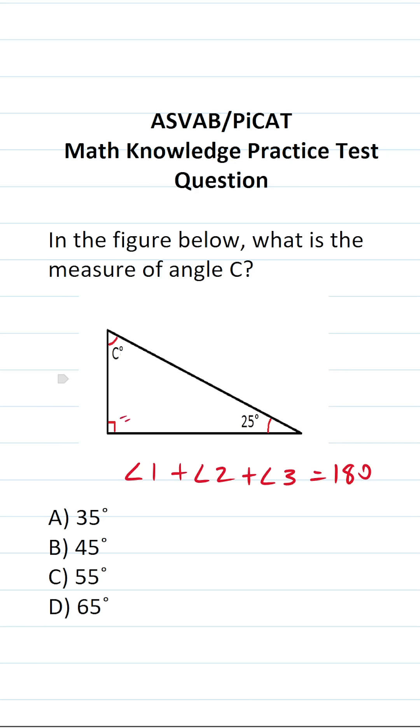We know that this angle right here is a right angle, so it's going to be 90 degrees. So 90 degrees plus this angle is 25 degrees plus angle C is going to always add up to 180 degrees according to the triangle sum theorem.